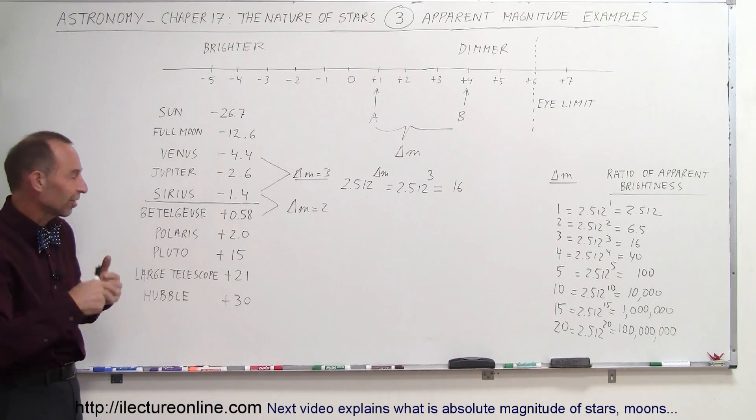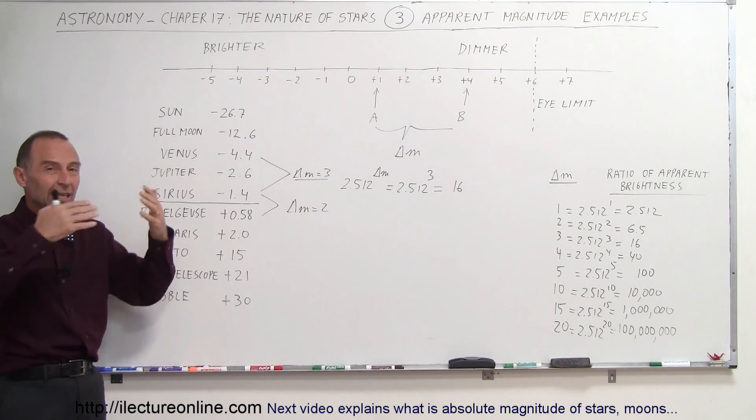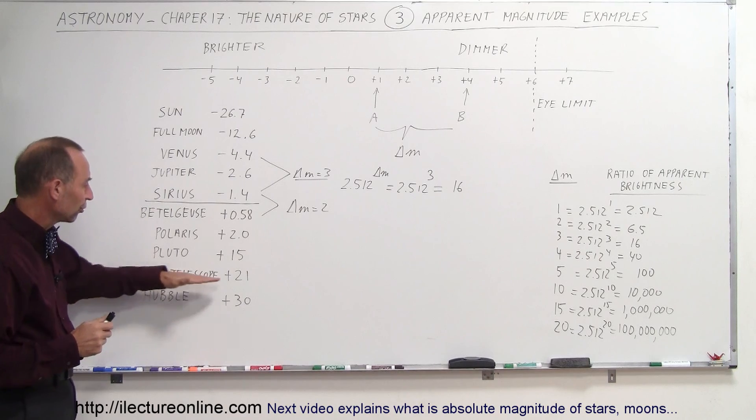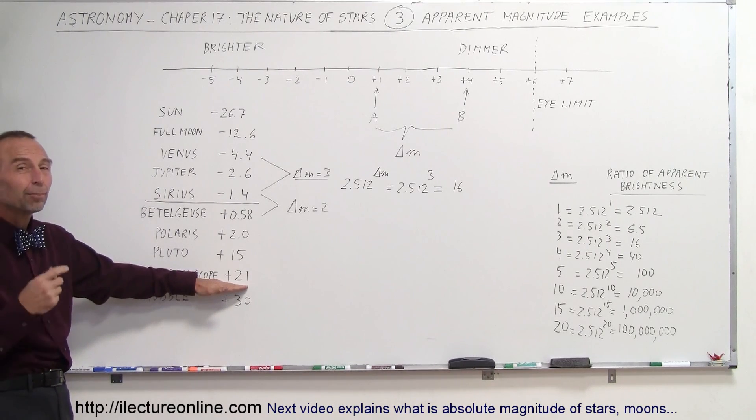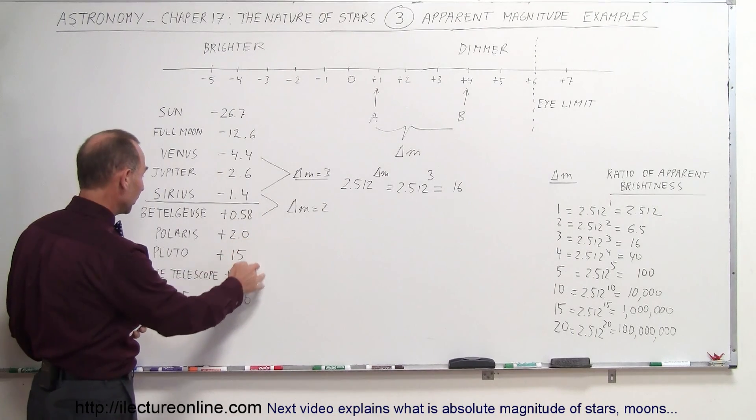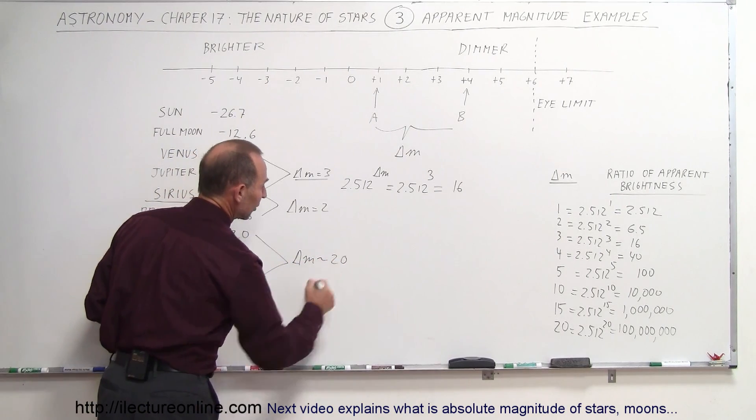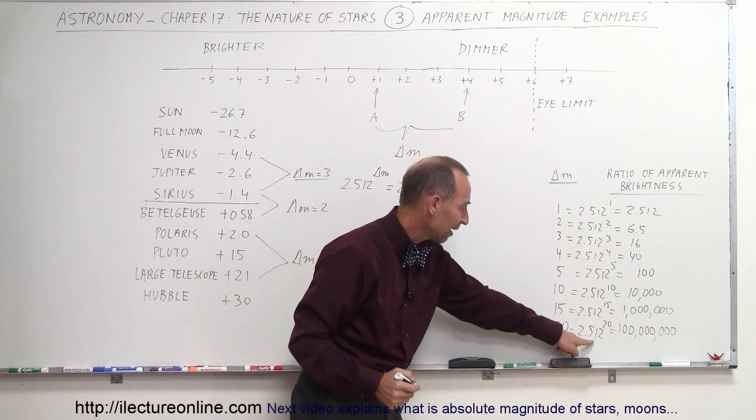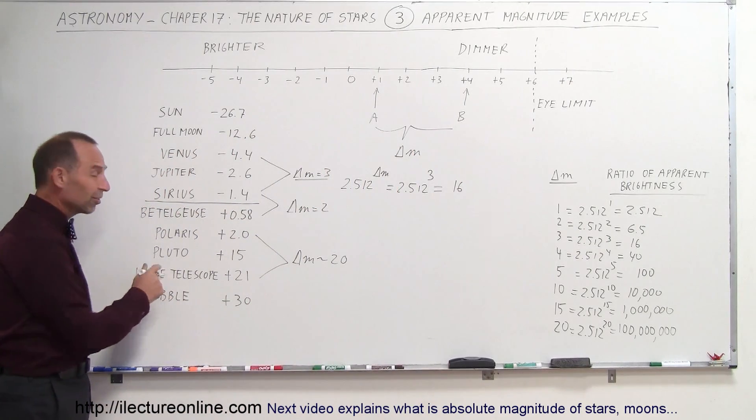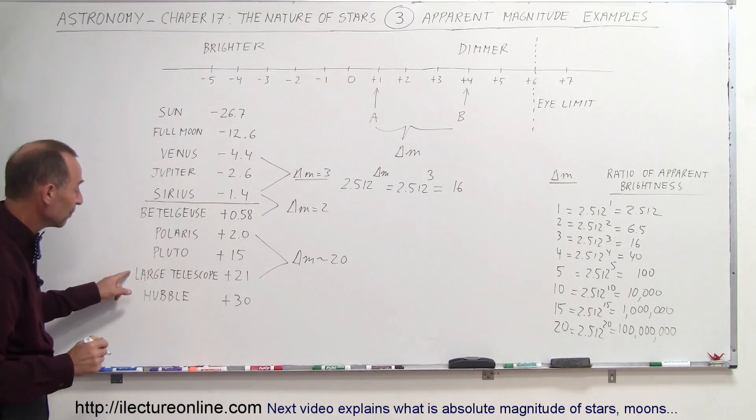The largest telescopes, urban telescopes, because the atmosphere makes it very difficult to see very sharp images with large telescopes, can see objects down to magnitude of about plus 21. If you compare plus 21 to Polaris, that difference is almost 20 magnitudes. 2.512 to the 20th power is a hundred million times. In other words, a large telescope can see objects that are a hundred million times dimmer than the star Polaris. It's amazing what they can do.